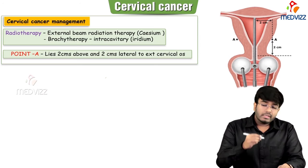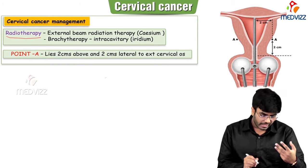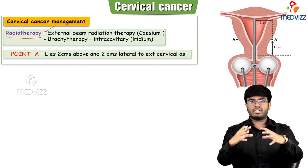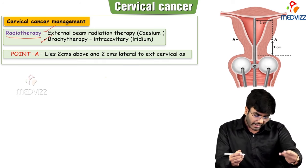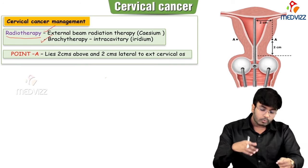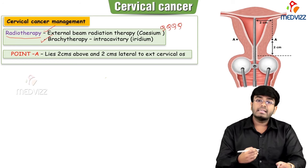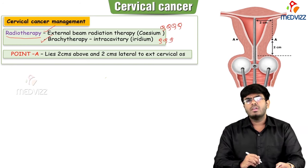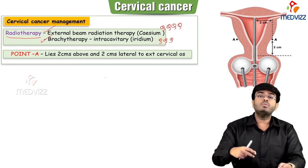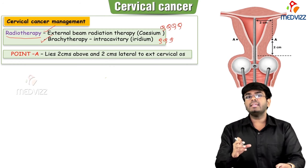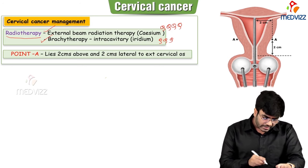Regarding radiotherapy: it can be given by two methods — external beam radiotherapy and brachytherapy. In external beam radiotherapy, cesium is used as the radiation source. In brachytherapy, iridium is used. Brachytherapy means placing the radiation source inside body cavities to expose neoplastic cells to radiation and destroy them.